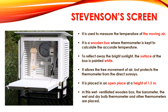Stevenson's screen is used to measure the temperature of moving air. It is a wooden box — as you know, wood is a poor conductor of heat — in which the thermometer is kept to calculate the accurate temperature. As you can see on the screen, the surface of the Stevenson screen is painted white to reflect away the bright sunlight and keep the temperature normal. If the surface were painted black, it would not give the accurate temperature because black absorbs heat inside. The thermometer inside is kept in such a way that it is protected from direct sun rays, but the free movement of air is allowed.